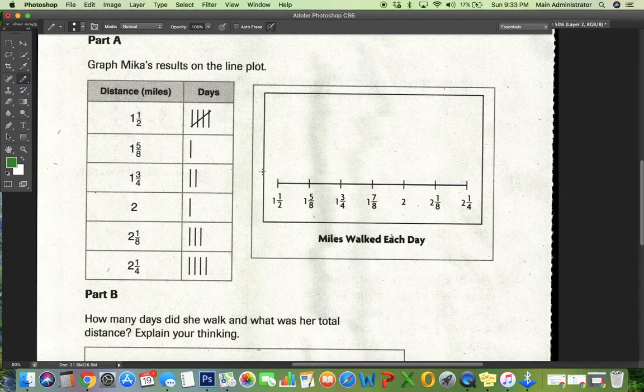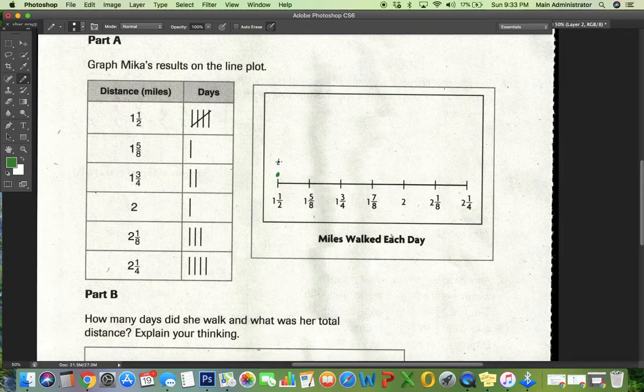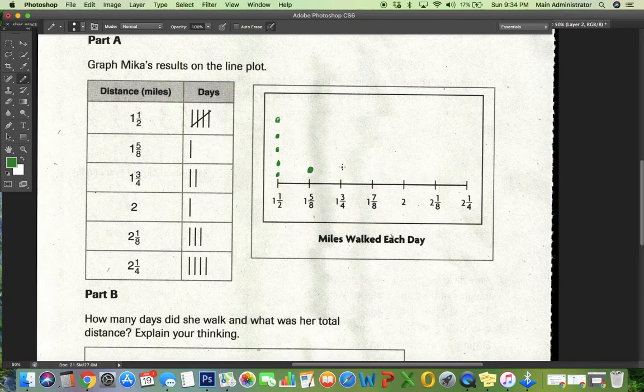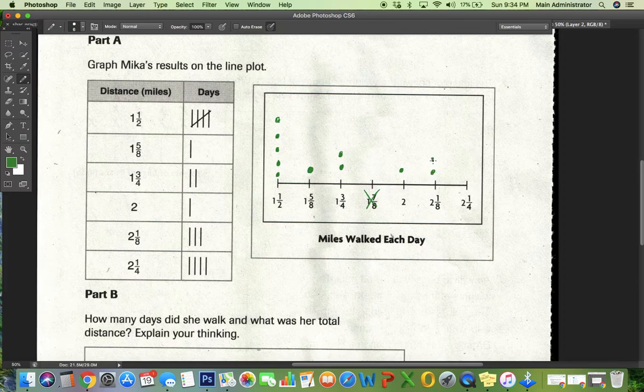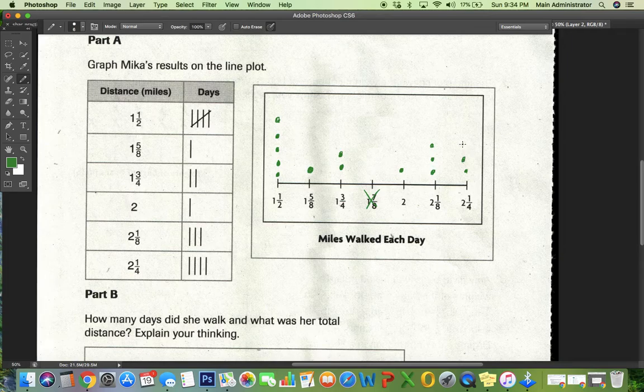This is five, right? So I'm going to do five dots. One, two, three, four, five. One of these, two of these. This does not occur. She did that once. She did that three times. One, two, three. And that one four times. One, two, three, four.